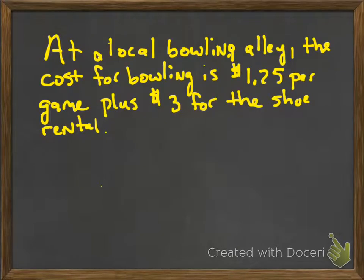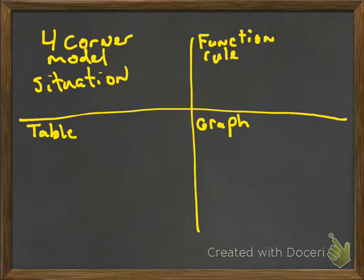Let's look at the next part. And let's look at this situation. At a local bowling alley, the cost for bowling is $1.25 per game, plus $3 for the shoe rental. So what we're going to do here is something similar to what we just did. But this time, I'm going to create what's called a four-corner model. A four-corner model basically tries to divide the situation into four different things we can look at. A table, a function rule, and a graph. And then we usually have the situation in another corner.